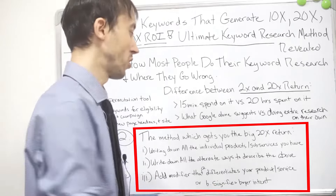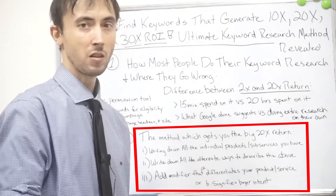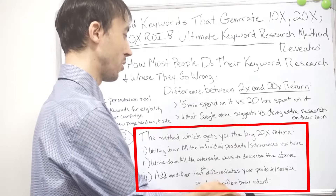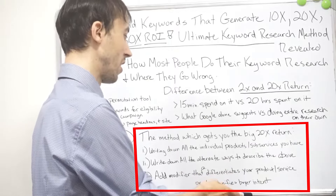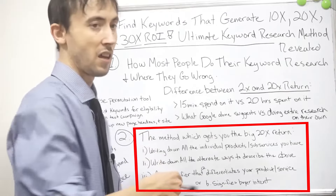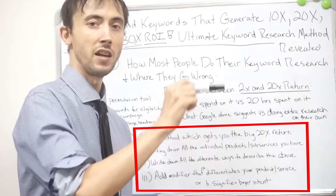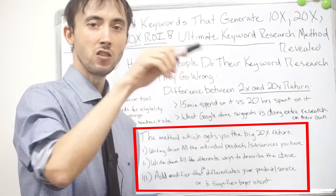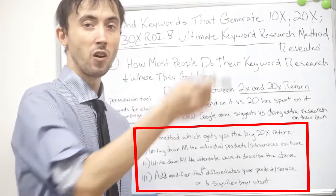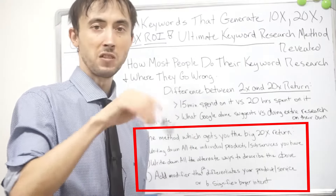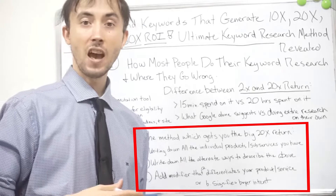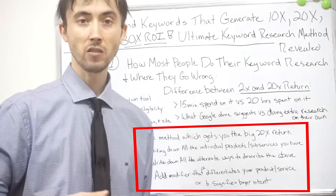The fourth step is: use your permutation tool. Once you've created that big list combining those two different things — the description of what problem you're solving or technical specification of what you offer, and the buying intent or differentiator at the beginning or end of the keyword — you use a permutation tool, which you can Google. What it does is take all the different combinations of the keywords: forwards, backwards, adding 'service' that was on the ending to the beginning, and so on. You might end up with 15,000, 20,000, or 50,000 keywords.